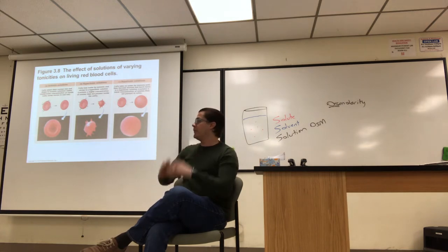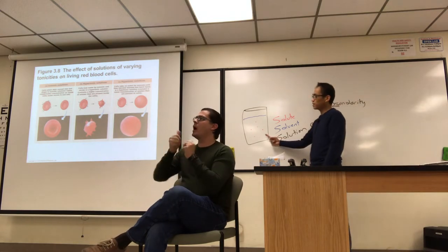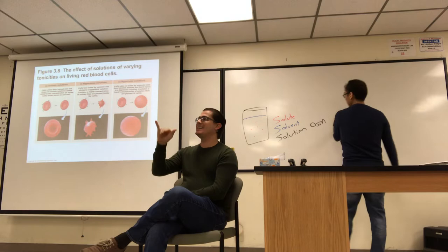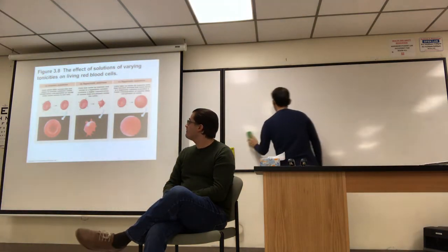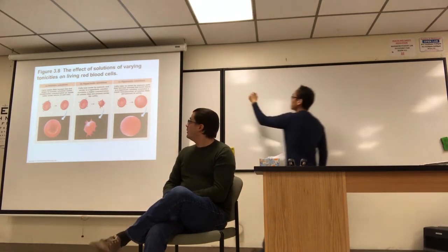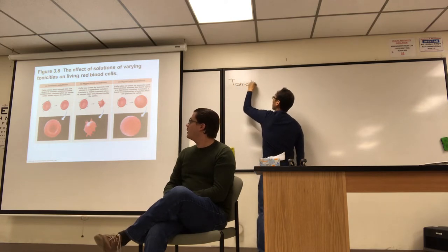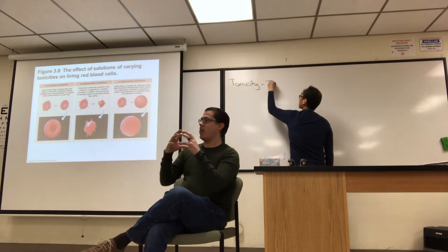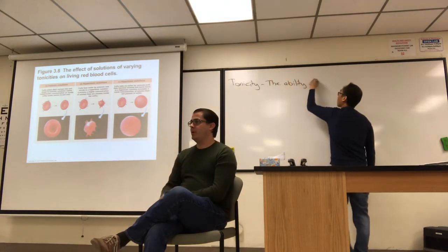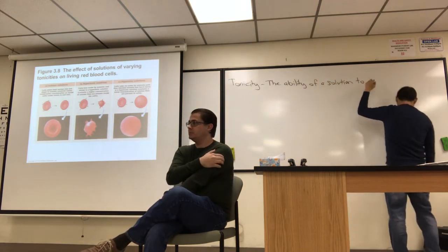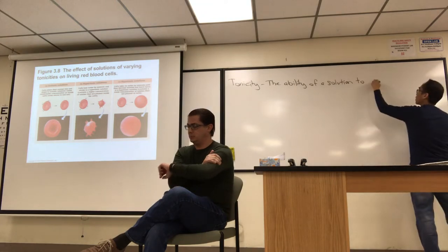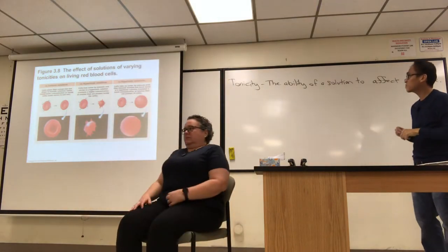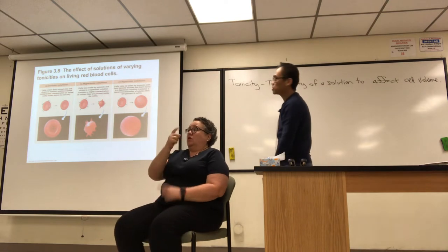Here's a picture of three possible scenarios of how a solution can affect cell volume. That is what we call tonicity — the ability of a solution to affect cell volume. The first scenario is called isotonic conditions.